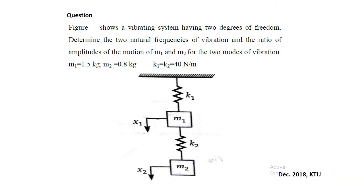Now we will discuss a university question asked during the December 2018 Kerala Technology University examination. The figure shows a vibrating system having two degrees of freedom. Determine the two natural frequencies of vibration and the ratio of amplitudes of motion of mass M1 and M2 for the two modes of vibration. Mass M1 = 1.5 kg, M2 = 0.8 kg, K1 and K2 are the stiffness of the springs equal to 40 N/m.